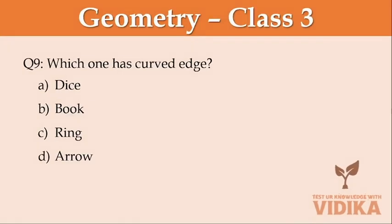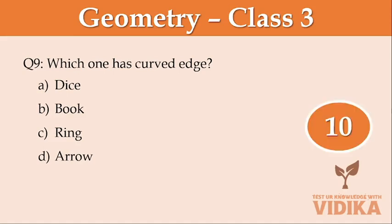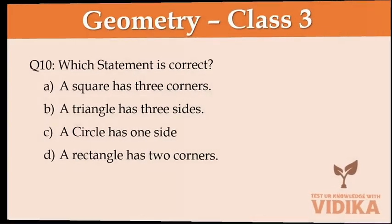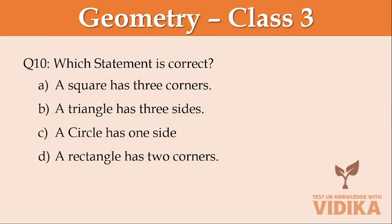Which one has a curved edge? Option A dice, option B book, option C ring, option D arrow. Which statement is correct? Option A a square has three corners, option B a triangle has three sides, option C a circle has one side, option D a rectangle has two corners.